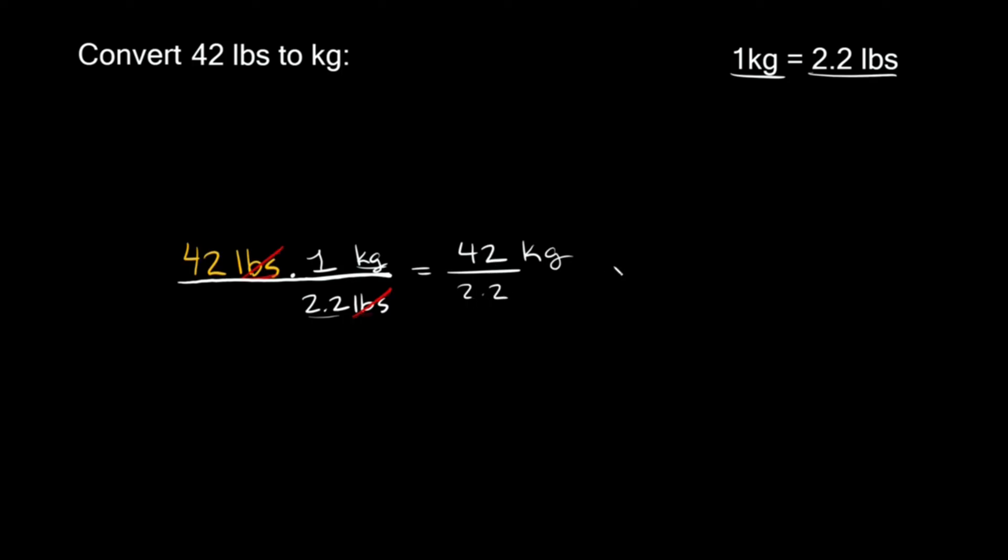So 42 divided by 2.2 is equal to approximately 19.1 and we still have our units on top, kilograms. So we carry those over also. So 42 pounds is equal to approximately 19.1 kilograms.